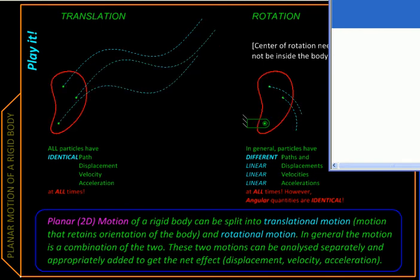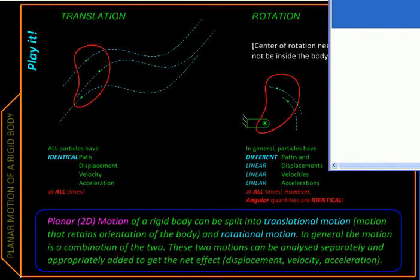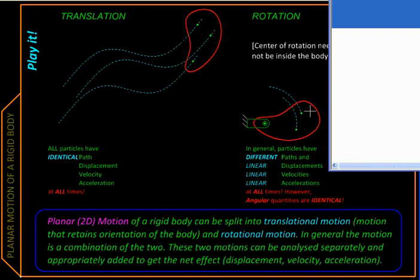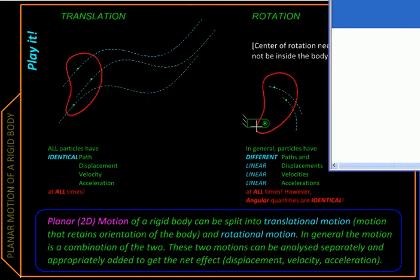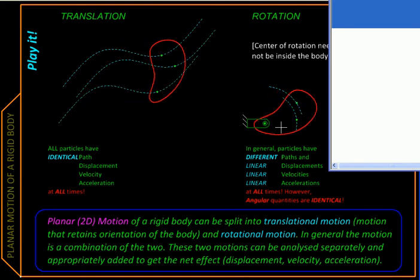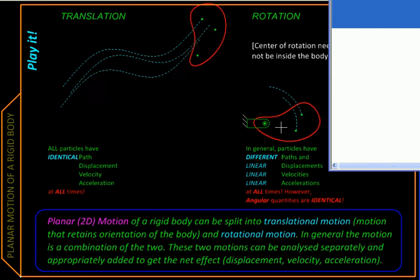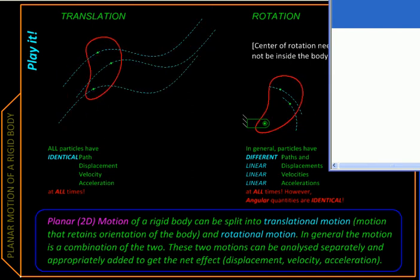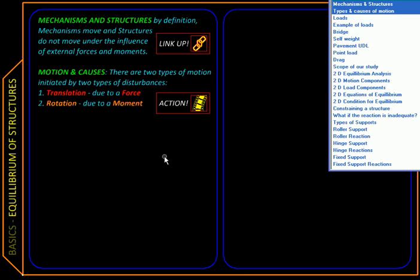In translation, all points within a body trace identical paths. While in rotation, as you can see here, the paths could be different. They are all arcs of circle, but they will be arcs of different circles or different radii. So that is the difference between translation and rotation. And now we also know what causes them.